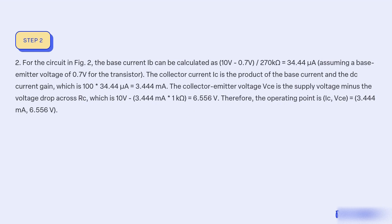Two, for the circuit in FIG. 2, the base current IB can be calculated as (10V minus 0.7V) / 270Ω equal to 34.44μA, assuming a base-emitter voltage of 0.7V for the transistor. The collector current IC is the product of the base current and the DC current gain, which is 100 × 34.44μA equal to 3.444mA. The collector-emitter voltage VCE is the supply voltage minus the voltage drop across RC, which is 10V minus 3.444mA × 1kΩ equal to 6.556V.